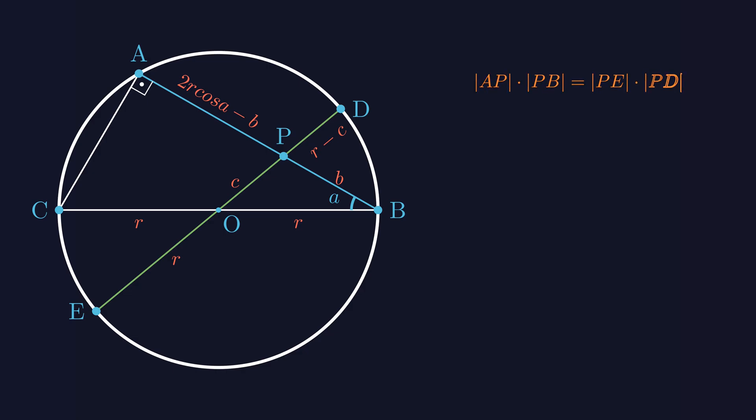The product of the two segments on one line equals the product on the other. If you now plug in the expressions we defined earlier and expand the parentheses, you'll end up with an equation like this.